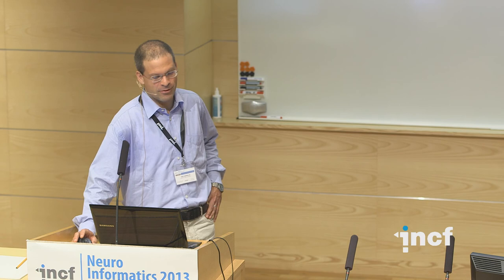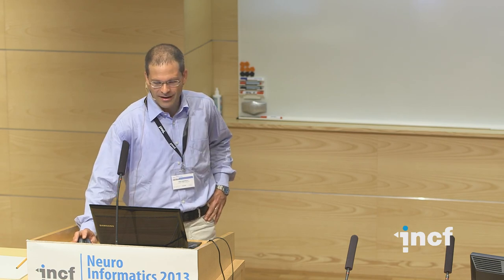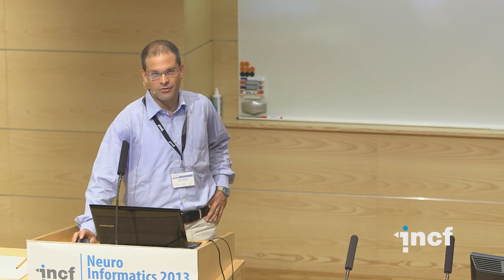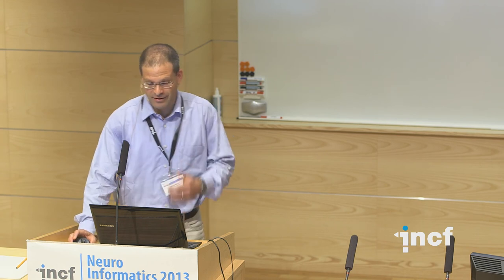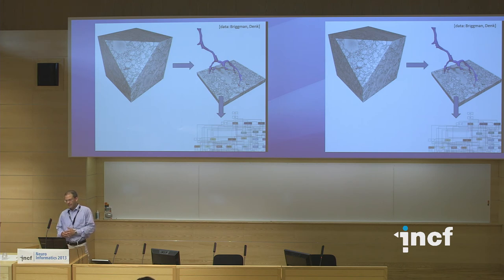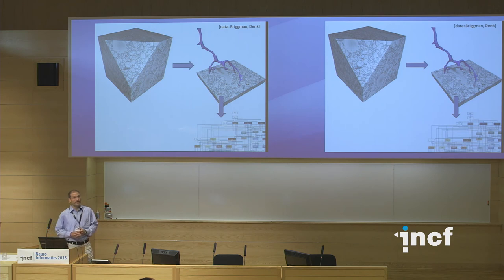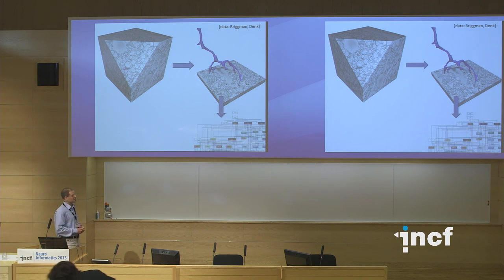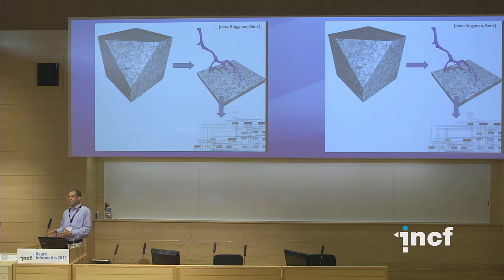We start from a volumetric image, and we want to find not just one but all the processes in there — a dense reconstruction. We want the processes and the synaptic connections between them to get a wiring diagram. This will be the end of one journey and the beginning of the next, because even if you have the wiring diagram, you have not understood a thing about the brain. But it's hard to imagine understanding the brain without its wiring diagram.